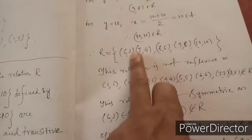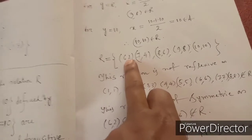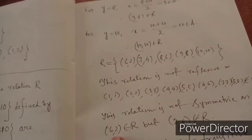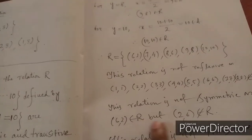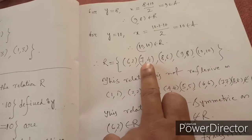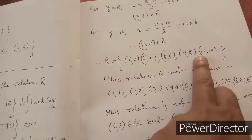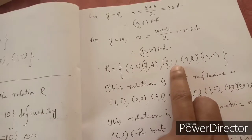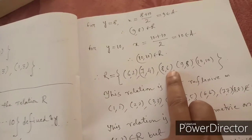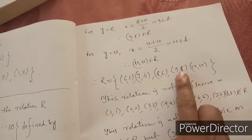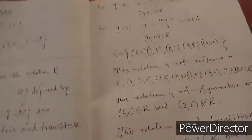This relation is not symmetric. For example, (6,2) belongs to R, but its reverse (2,6) does not belong to R. Similarly, (7,4) belongs to R but (4,7) does not; (8,6) belongs to R but (6,8) does not; and (9,8) belongs to R but (8,9) does not.